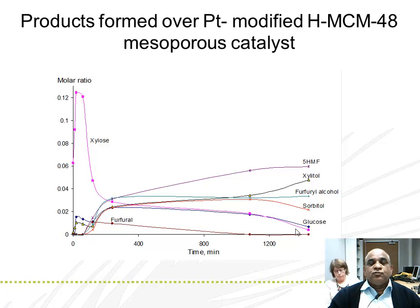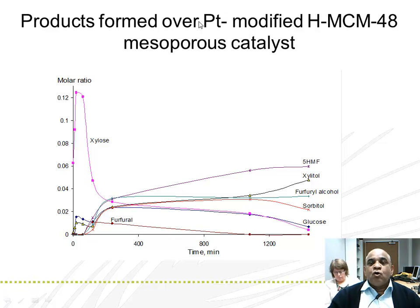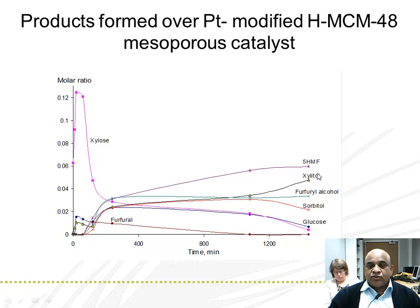But the moment we use platinum-modified MCM-48 — and here I would like to emphasize the role of platinum metal — we find that we get xylitol and sorbitol. This is one of the first results we report